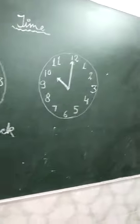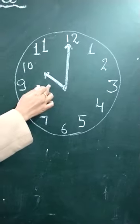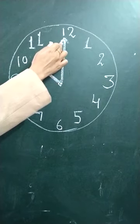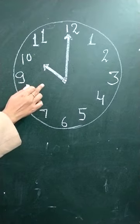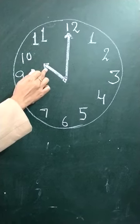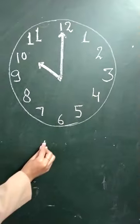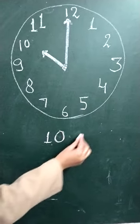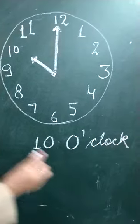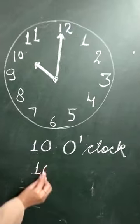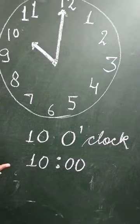Now look at the other clock on the board. Again there are two hands. The long hand is the minute hand and the short hand is the hour hand. You can see the minute hand is pointing towards twelve and the short hand is pointing towards ten. So the time is ten o'clock. We write it as 'ten o'clock' or '10:00'.